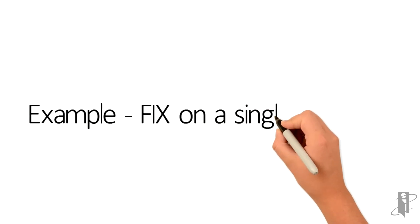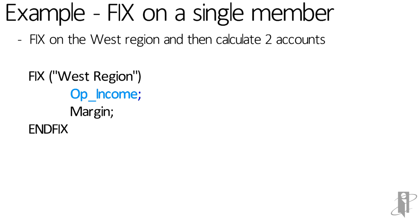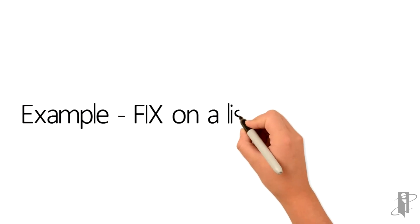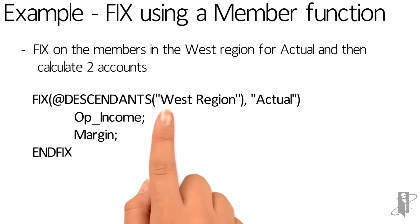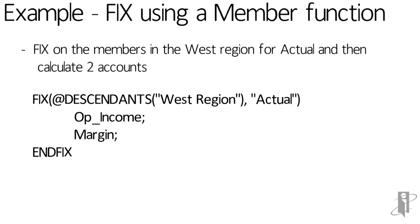Let's say we wanted to fix on a specific member. In this case we're going to fix on the Western region and then calculate two accounts: Op Income and Margin. It's not going to pull into memory any of the other regions or anything beneath the West region — just the specific member West Region. If you specify multiple dimensions in the FIX, it does the intersection of those dimensions. So a FIX on West and South along with Actual means where it's equal to West or South AND equal to Actual. Using a member set function inside a FIX is extremely powerful — for example, @DESCENDANTS of West Region comma Actual gives the intersection of all members in West on the Actual slice of data.